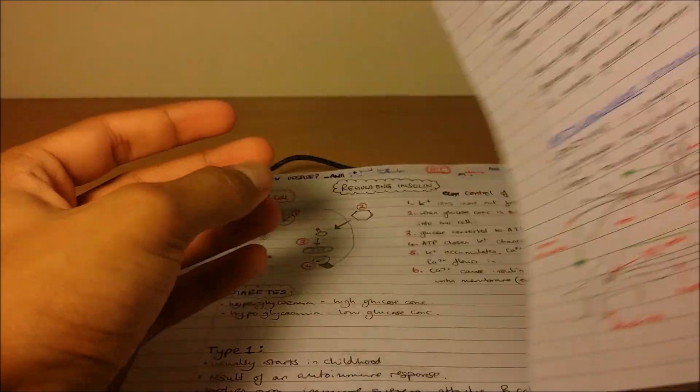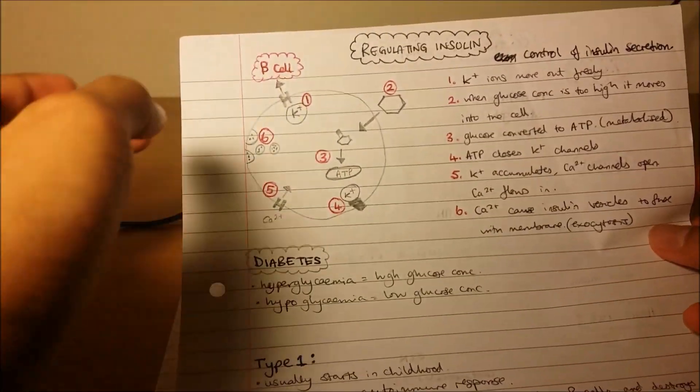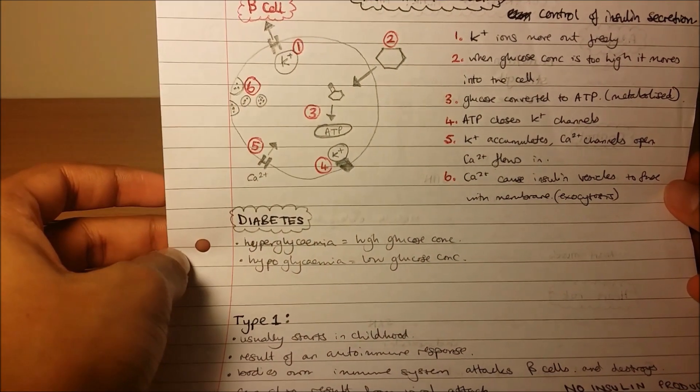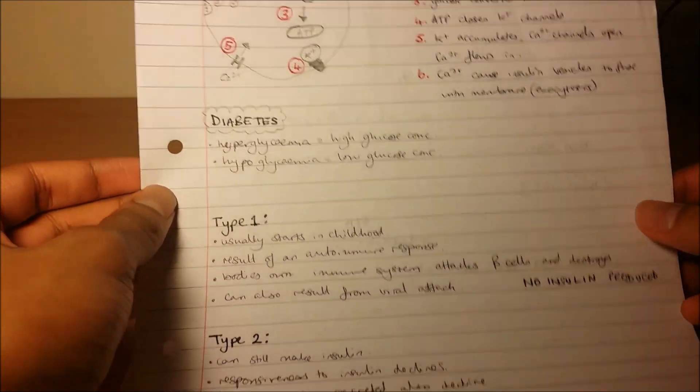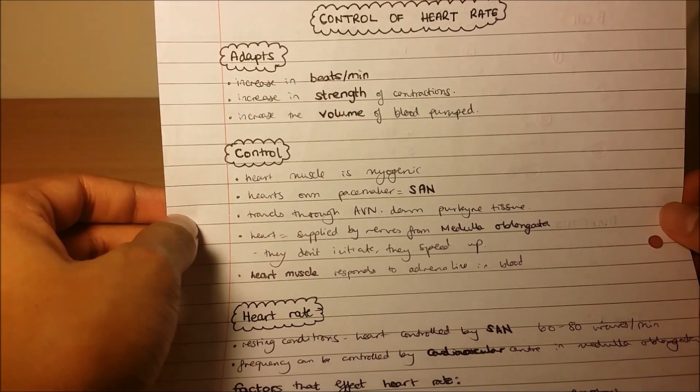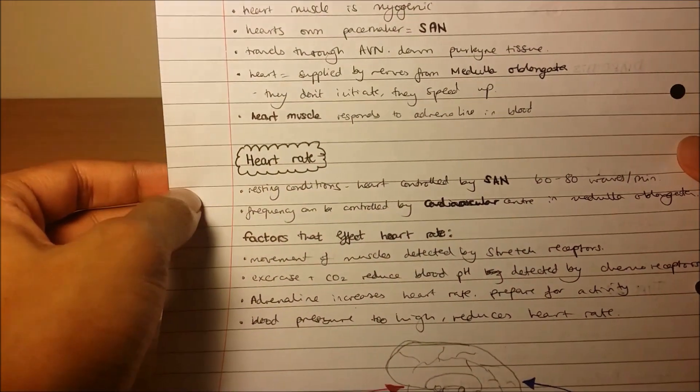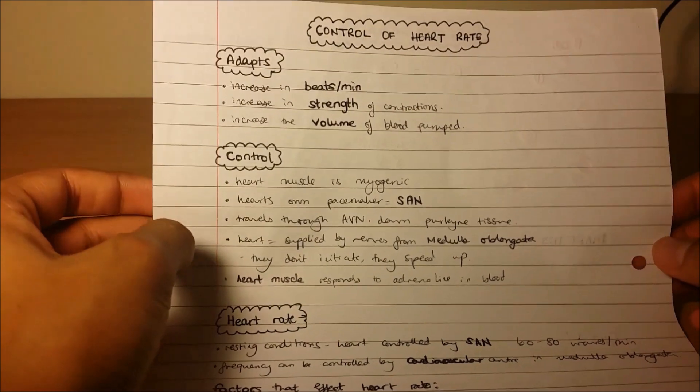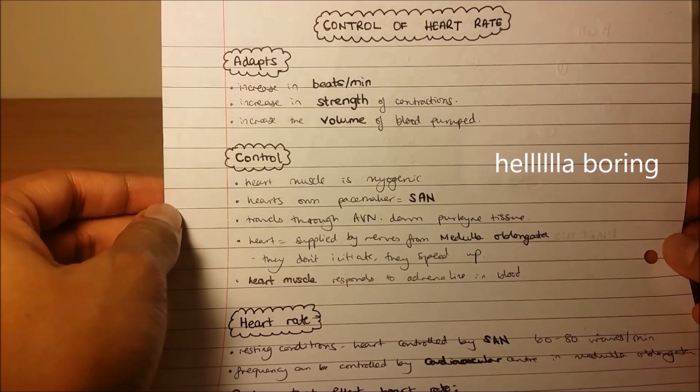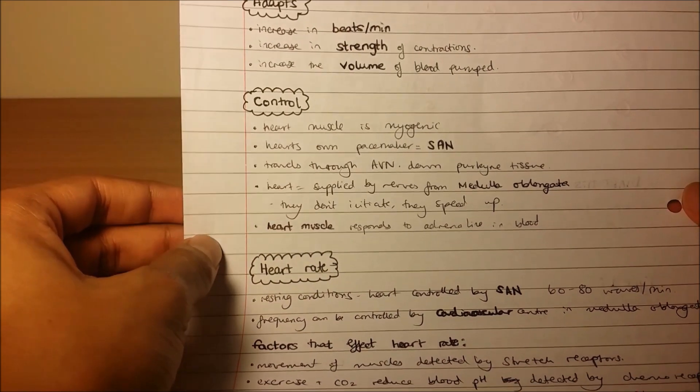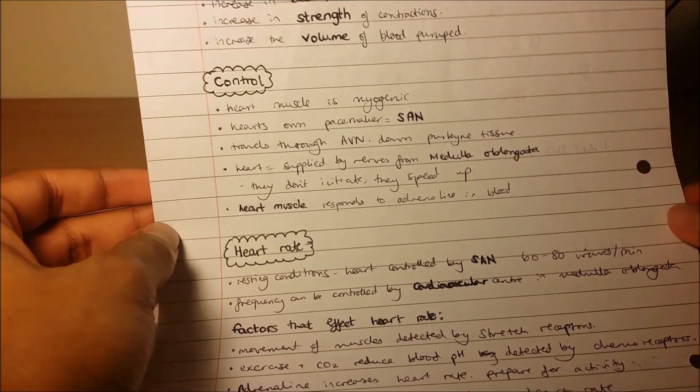Here again, another set of notes from biology. Again, diagrams, bullet points, headings, use of different colors. Now this is a bad example here—I've just got everything in black except for down here. This is quite boring to read. Imagine trying to revise this—it can get quite boring and I don't see myself remembering any of this stuff.